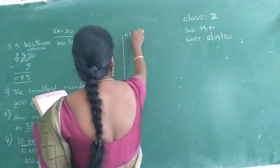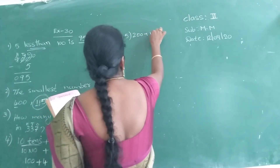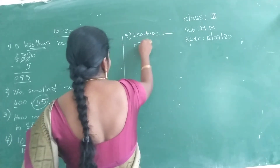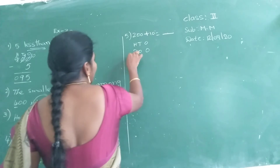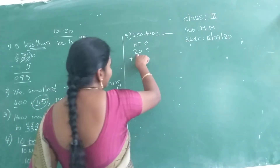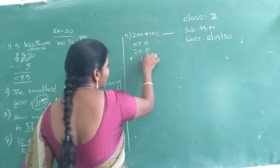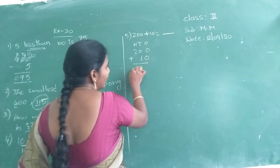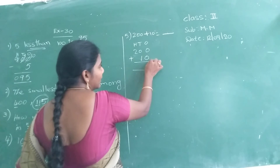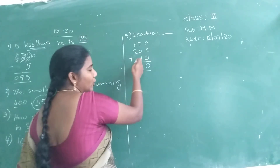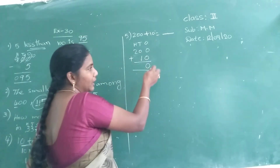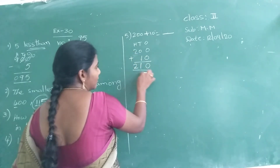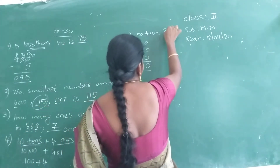Fifth problem: 200 plus 10 is equal to dash. Add 200 plus 10. Here only two places are there, so write from ones place. 0 plus 0 is 0. 0 plus 1 — if you add 0 to any number you get the same number. 2, and no other number is there. So the answer is 210.